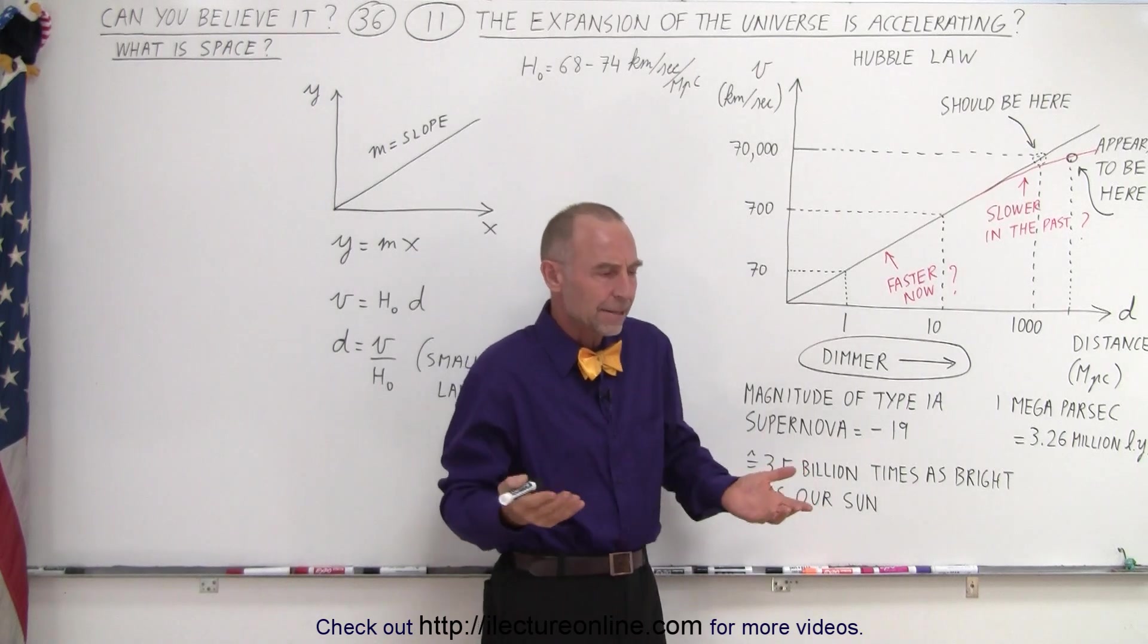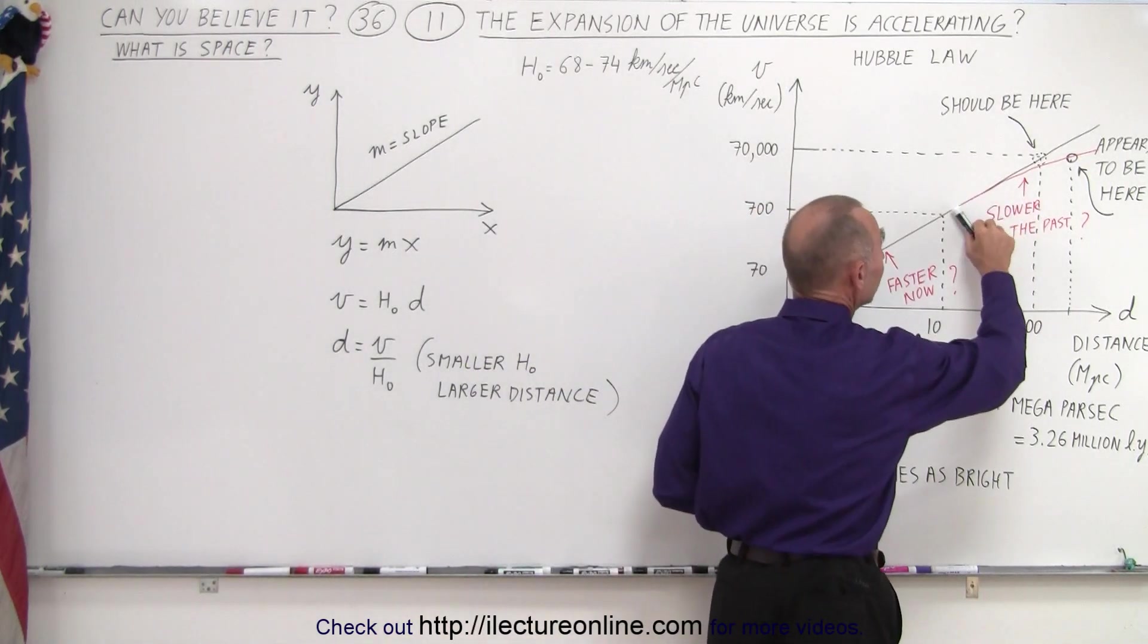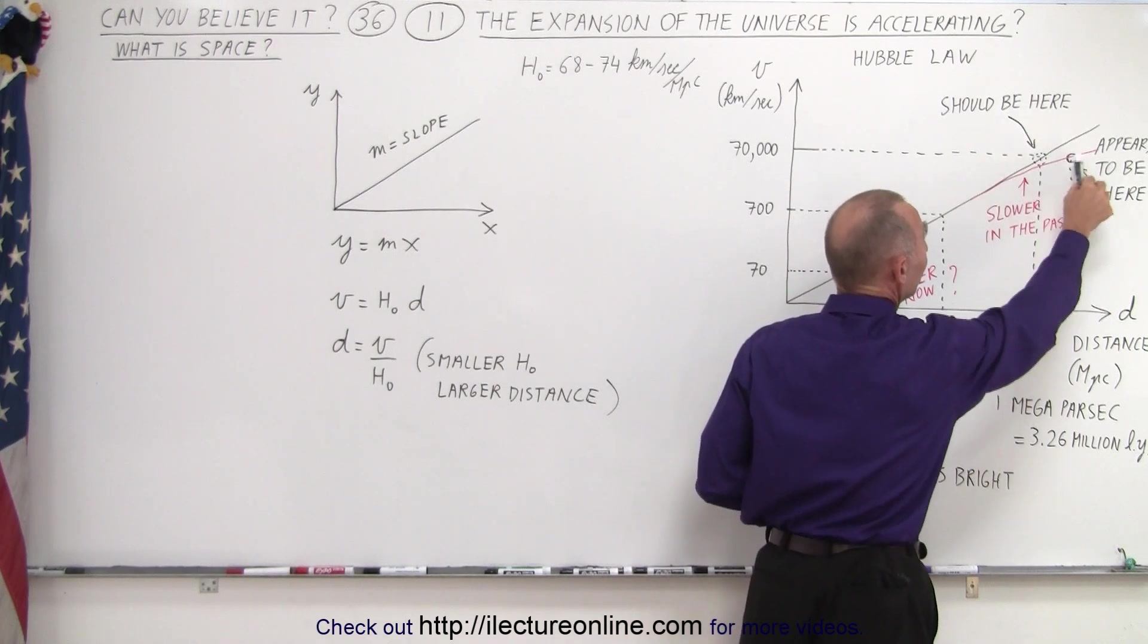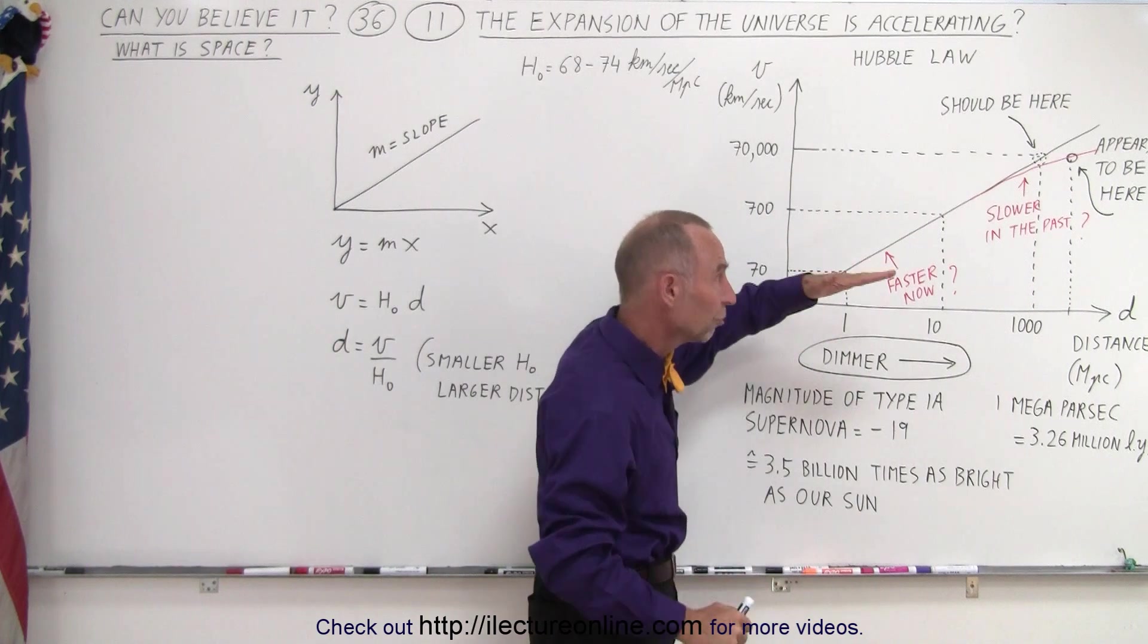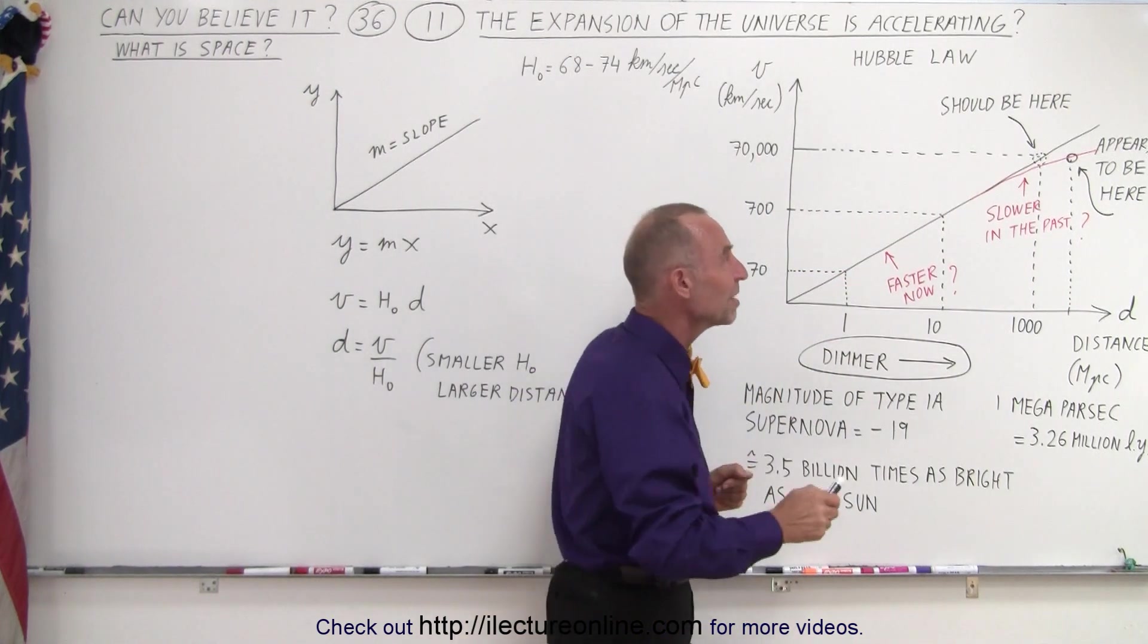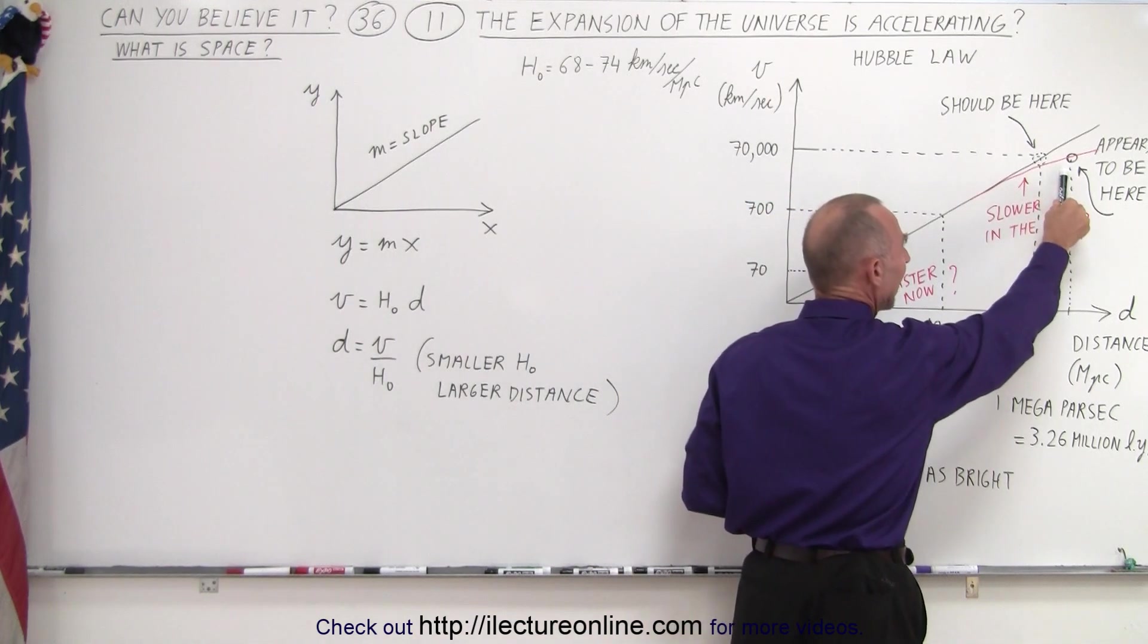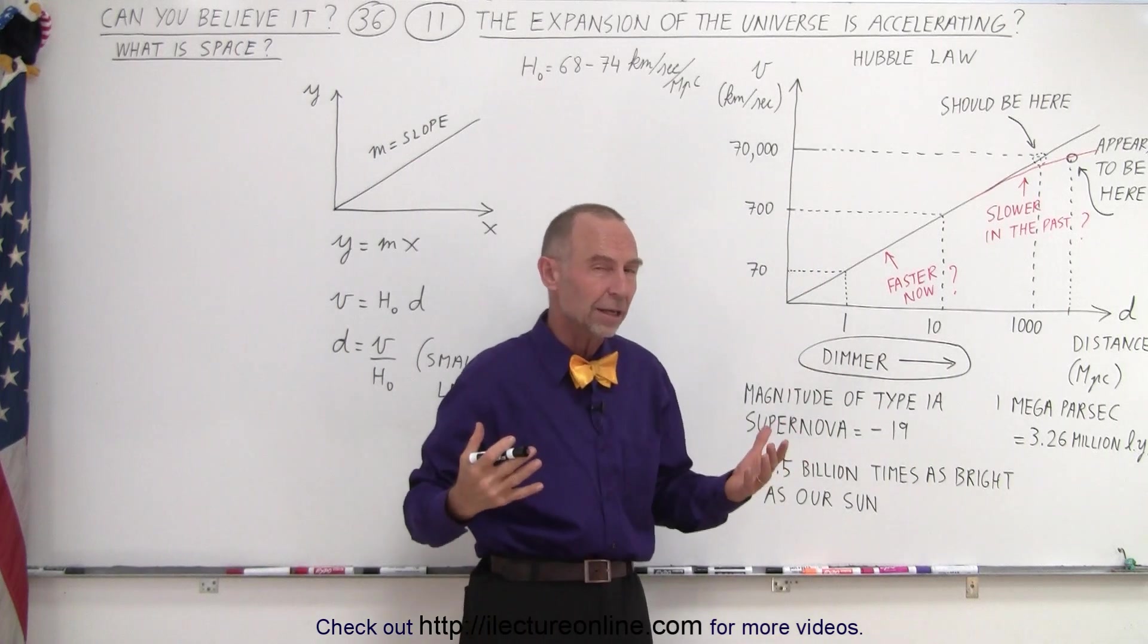How can that be? This can only mean that far away from us—which means far back in time—the recessional velocities were slower. The Hubble constant was smaller. Things must have been expanding at a slower rate in the past and appear to be expanding faster today.